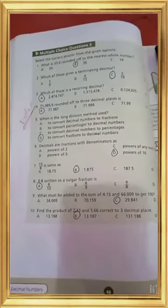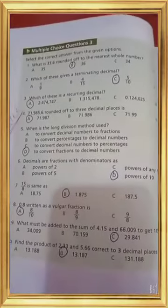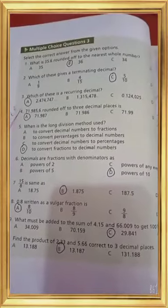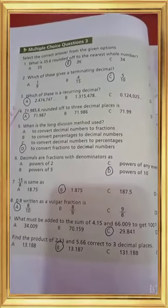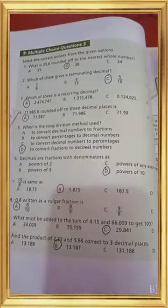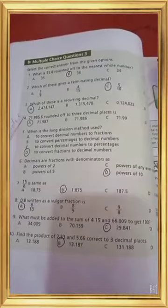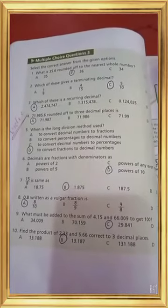It's multiple choice questions. Question number 1: Select the correct answer from the given options. What is 35.6 rounded off to the nearest whole number? As we know, 6 is greater than 5, then we add one number in 35. It's 36.